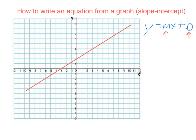Let's say we have a line that looks like this. We need to figure out what the slope of the line is and where it crosses the y-axis — those are the two pieces of information we need. The simplest one to find is where it crosses the y-axis, which goes straight up and down. It crosses right here, two steps up from the origin, so we know that number is going to be plus 2. Wherever this line crosses the y-axis, that's what we put at the end of our equation.